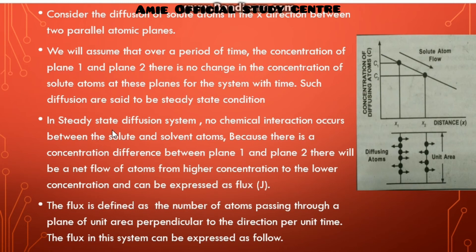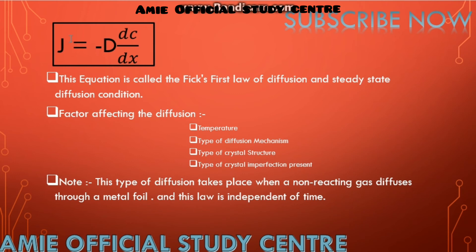In a steady-state diffusion system, no chemical interaction occurs between the solute and solvent atoms because of the concentration difference. Between plane 1 and plane 2, there will be a net flow of atoms from higher to lower concentration, which can be represented as diffusion flux. The flux is defined as the number of atoms passing through a plane of unit area perpendicular to the direction per unit time.